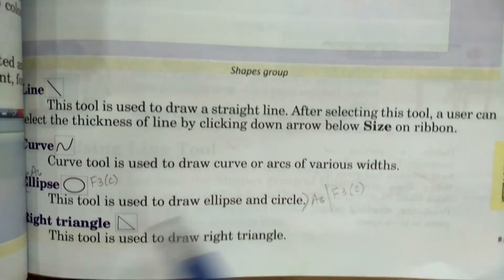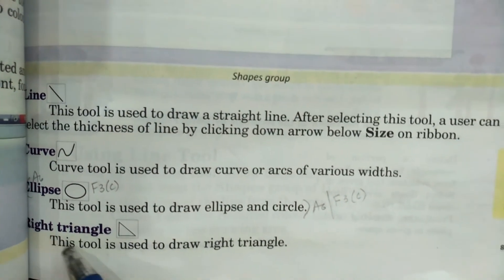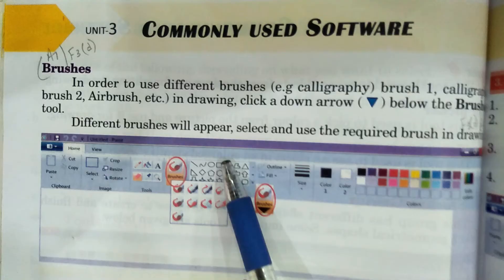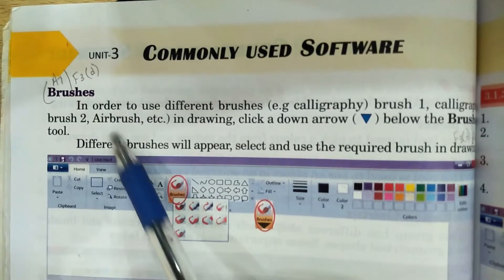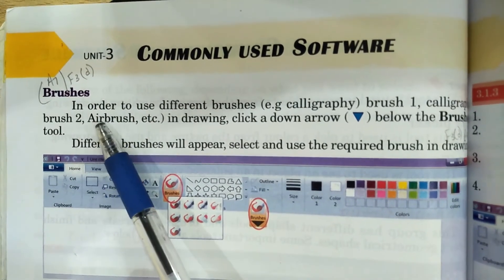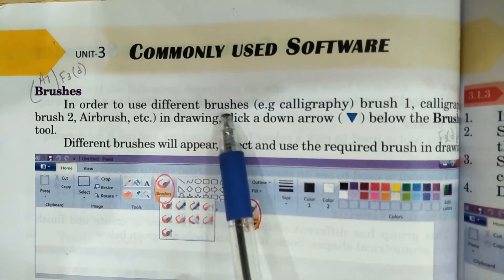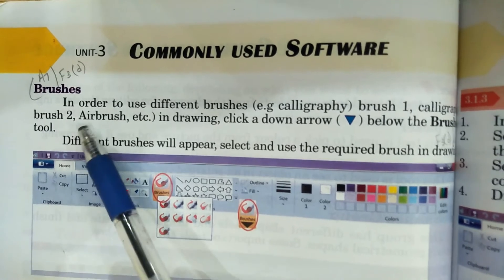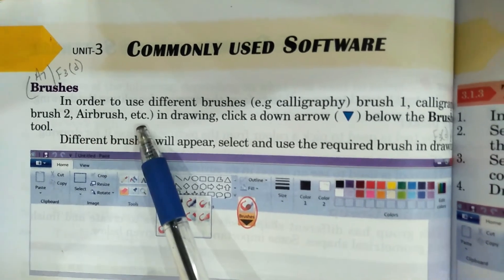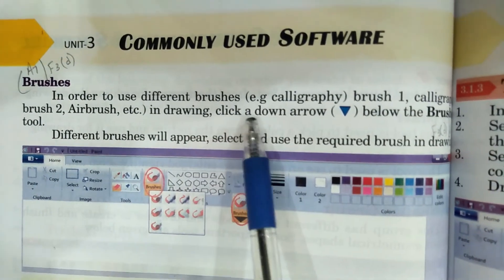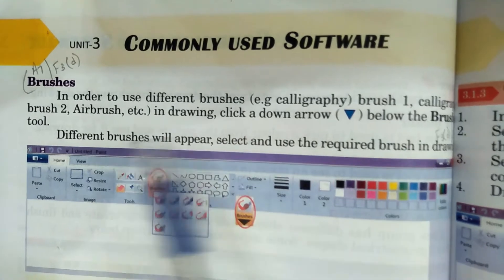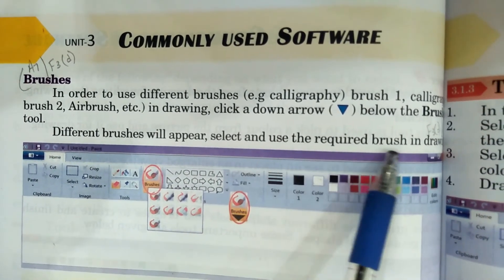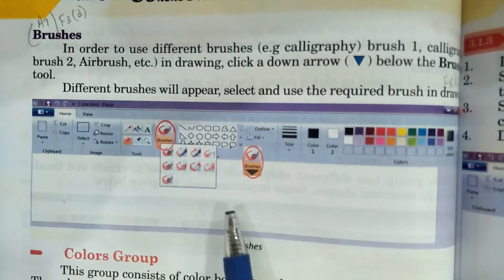Ellipse and circle. Right triangle — this tool is used to draw a right triangle. Brushes — in order to use different brushes, for example calligraphy brush 1, calligraphy brush 2, airbrush, etc., click the down arrow below the brushes tool. Different brushes will appear; select and use the required brush in your drawing.